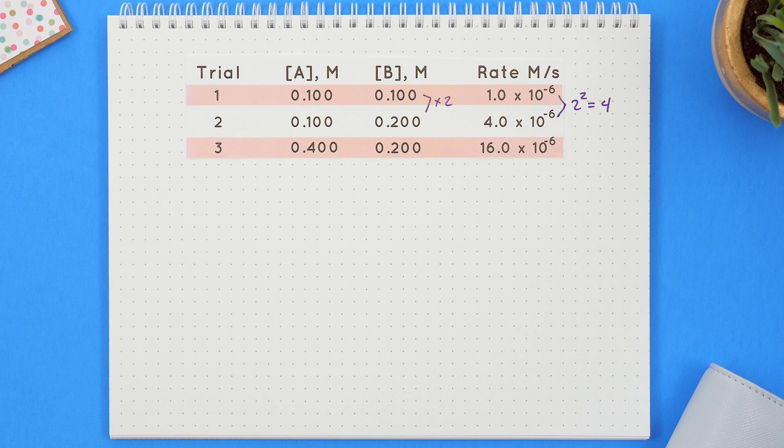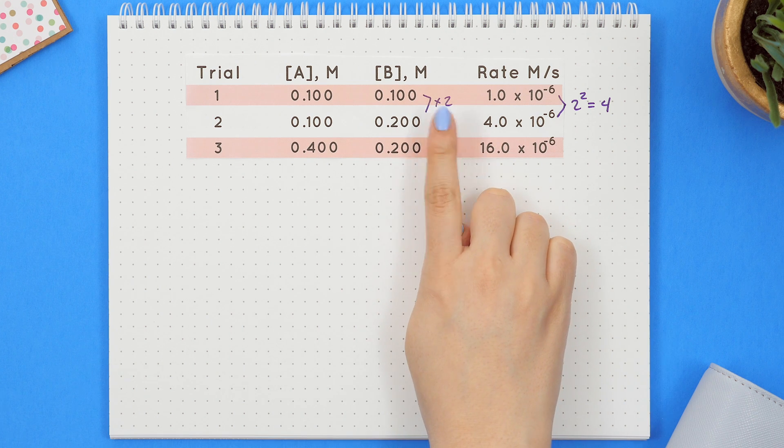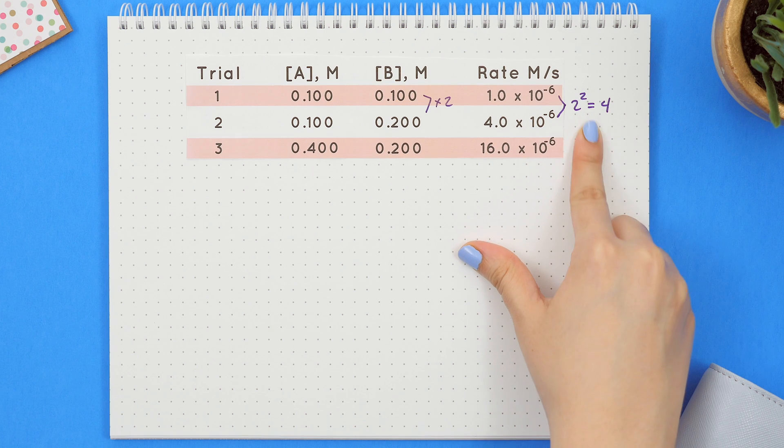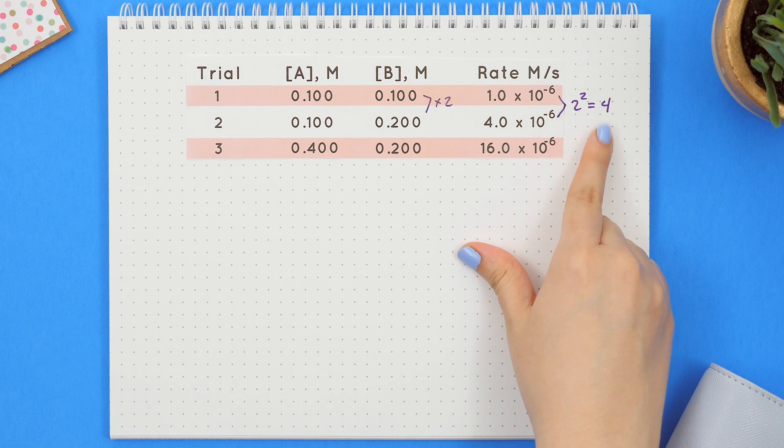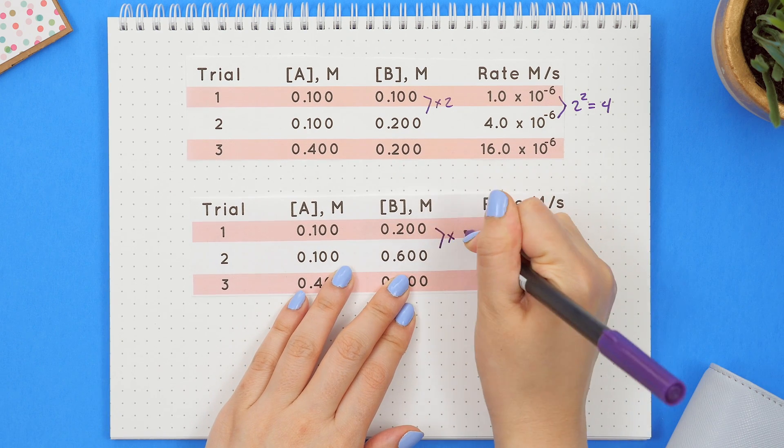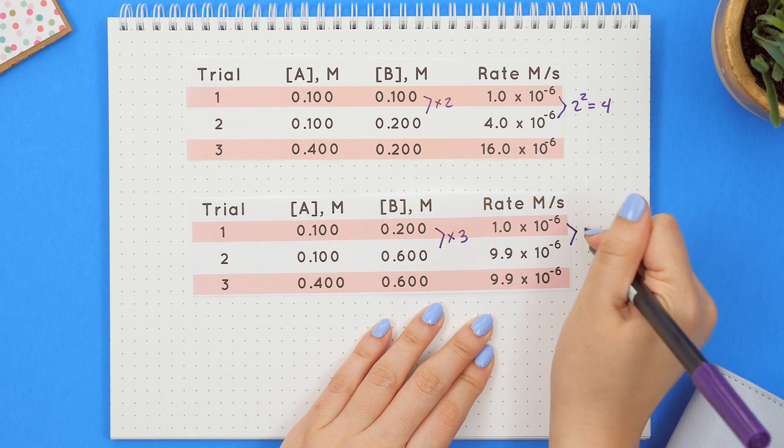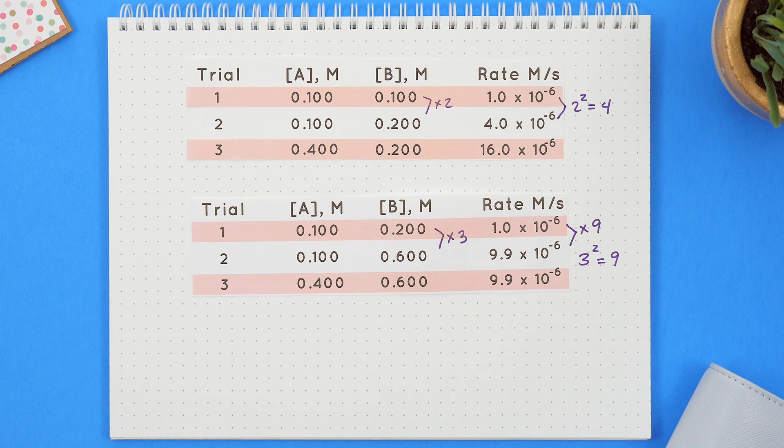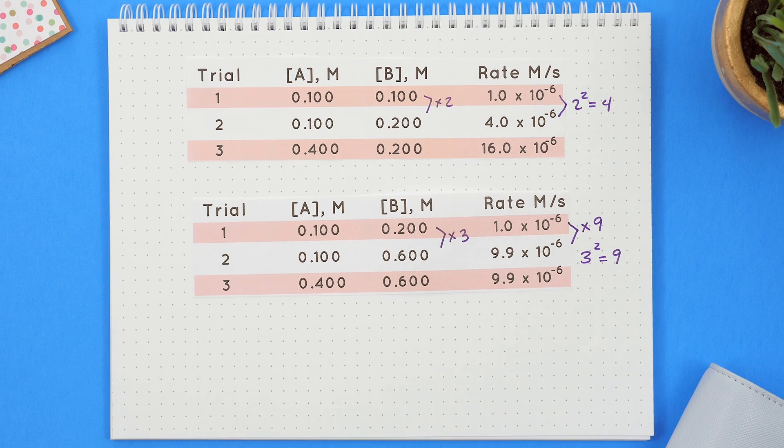Here are some examples. We are multiplying by two here and for the rate we are multiplying by four since two squared is four. Or in this table where we are multiplying by three then multiplying the rate by nine since three squared is nine. So right there both of those examples are second order.